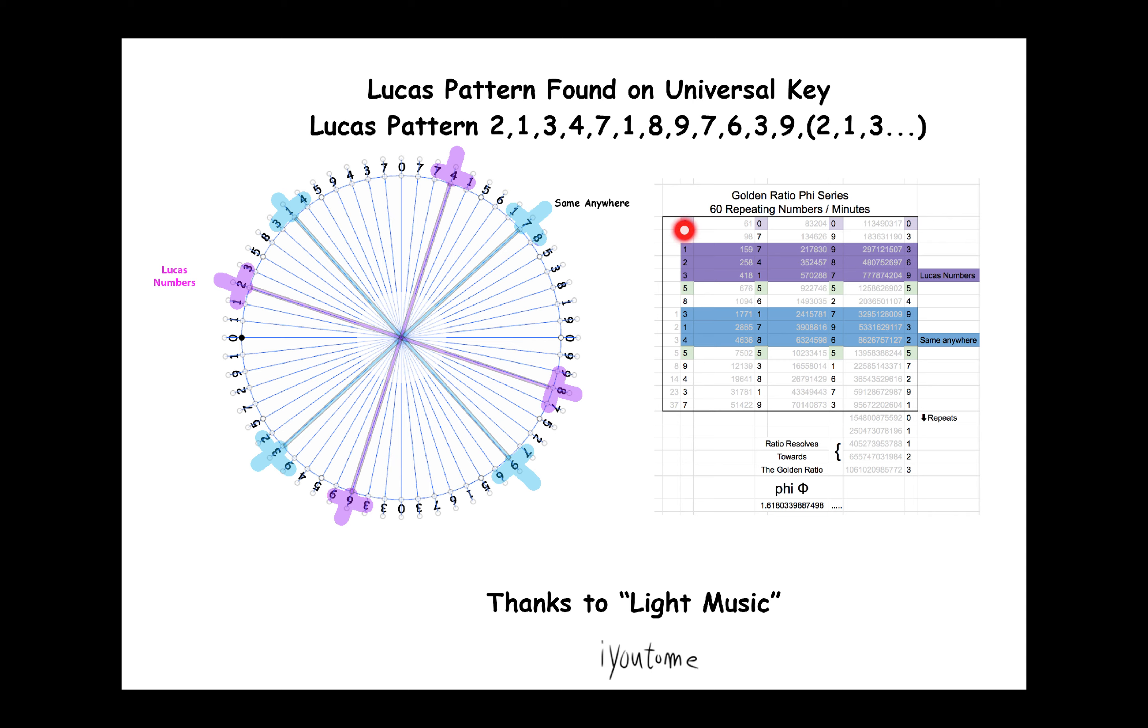So I had a look inside the 6 repeating numbers. When it's laid out like this, you can see that here's your numbers: 2, 1, 3, 4, 7, 1, 8, 9, 7, and 6, 3, 9. Coming over to the 60 on the circle here, you'll see it: 2, 1, 3, 4, 7, 1, 9, 8, 7, and then of course the 6, 3, 9.